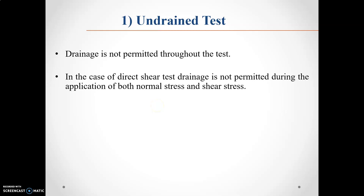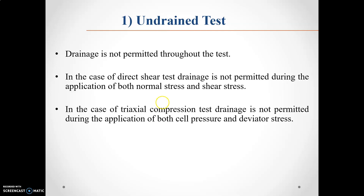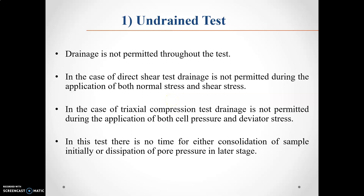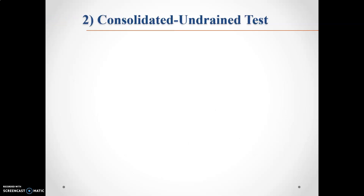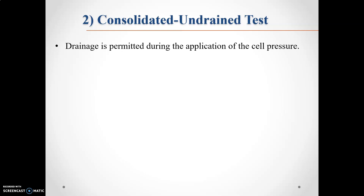In the undrained test, drainage is not permitted throughout the test. In the direct shear test version, drainage is not permitted during application of both normal stress and shear stress. In the triaxial compression test version, drainage is not permitted during application of both cell pressure and deviator stress. Since the test is conducted quickly, allowing no time for consolidation or dissipation of pore pressure, it is also called the quick test or quick undrained test.